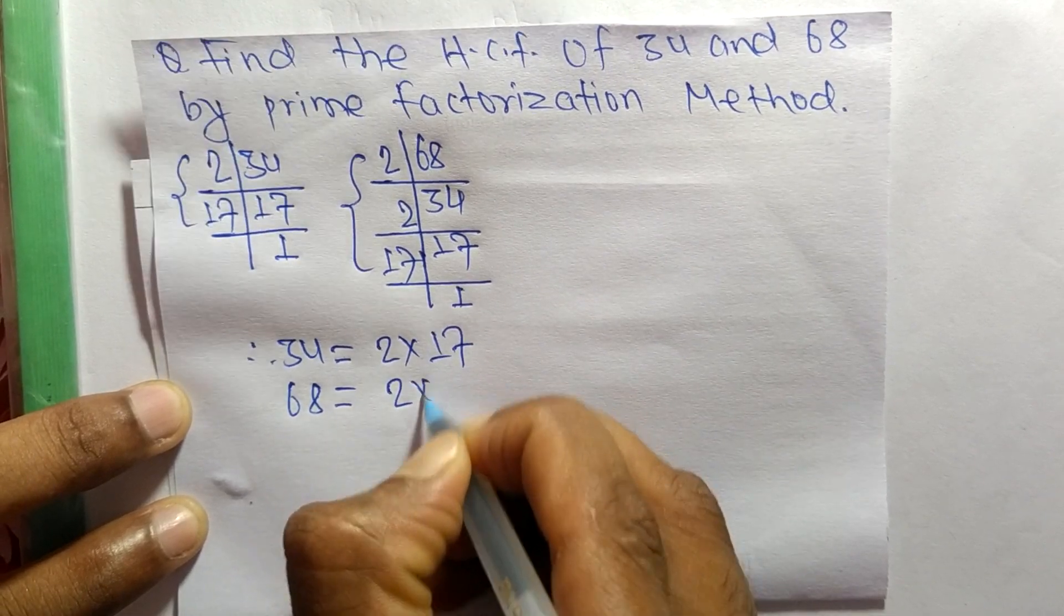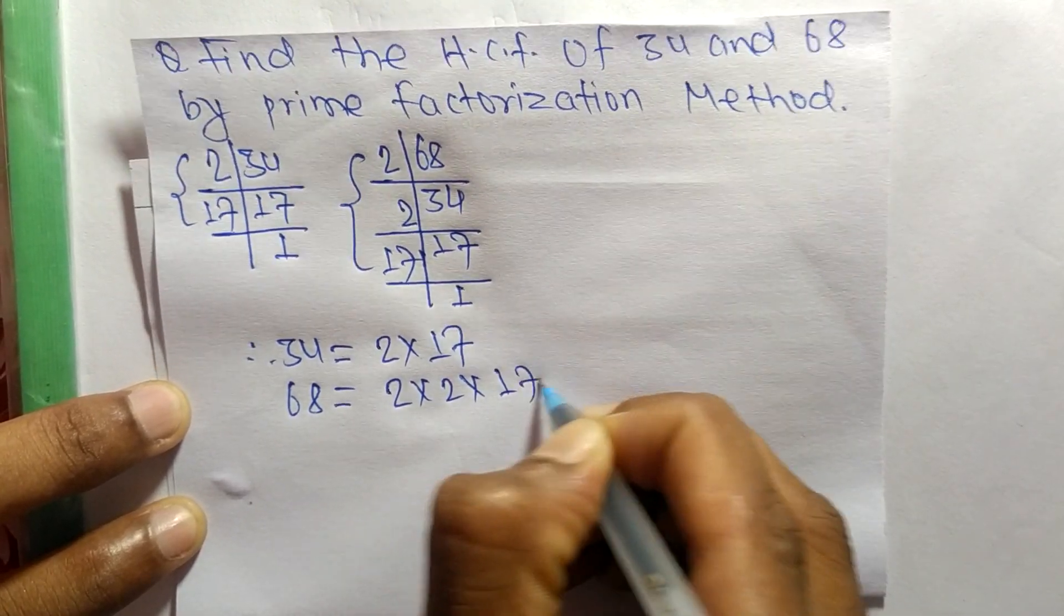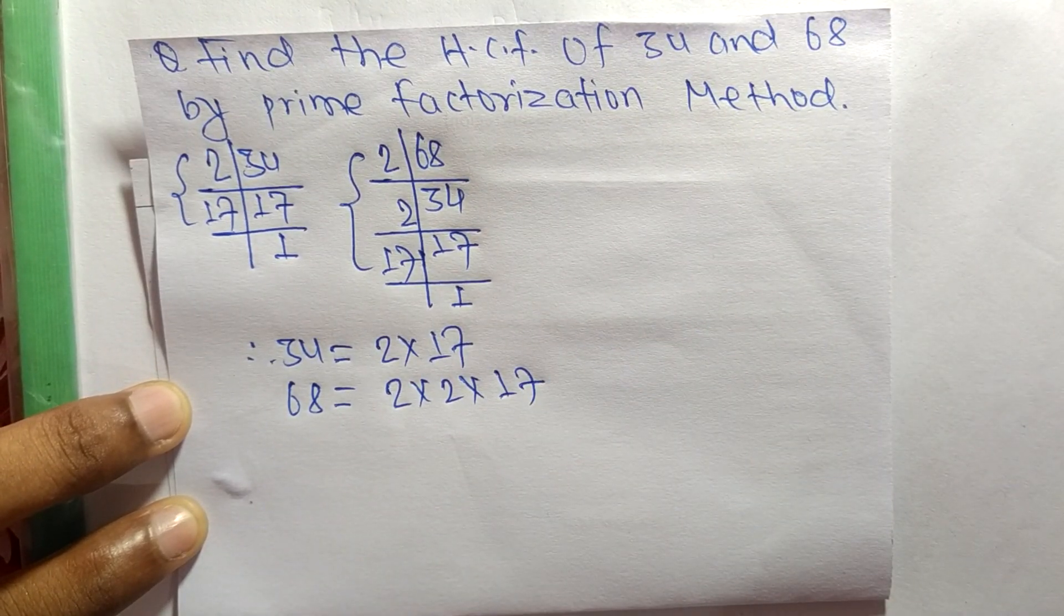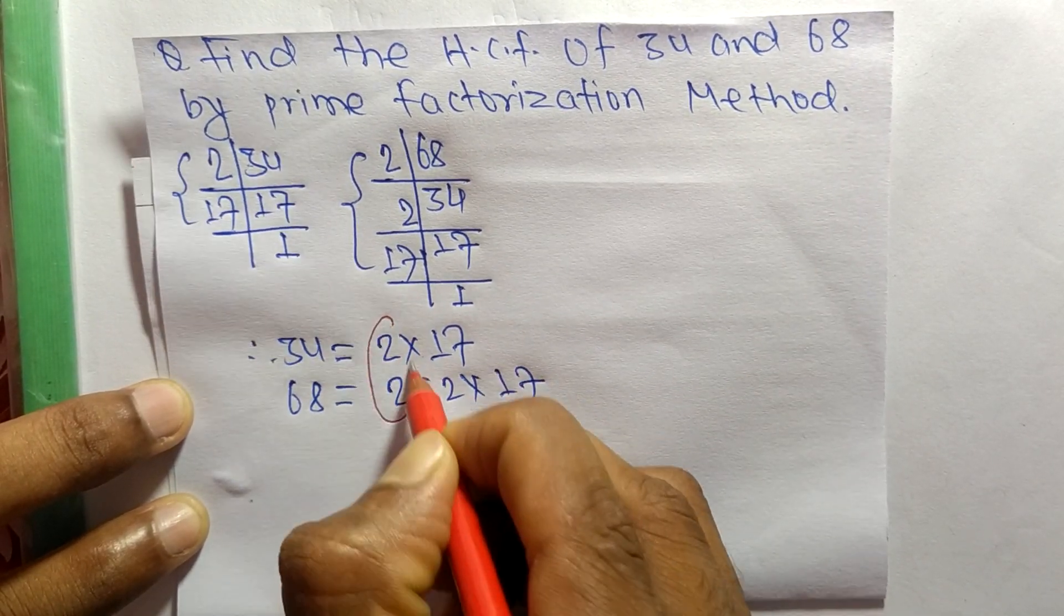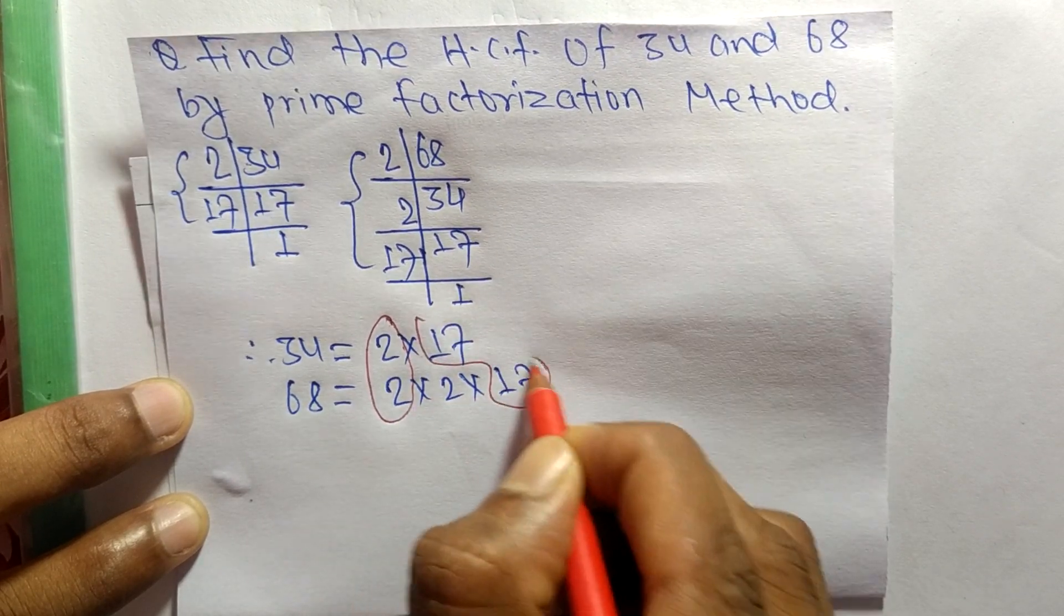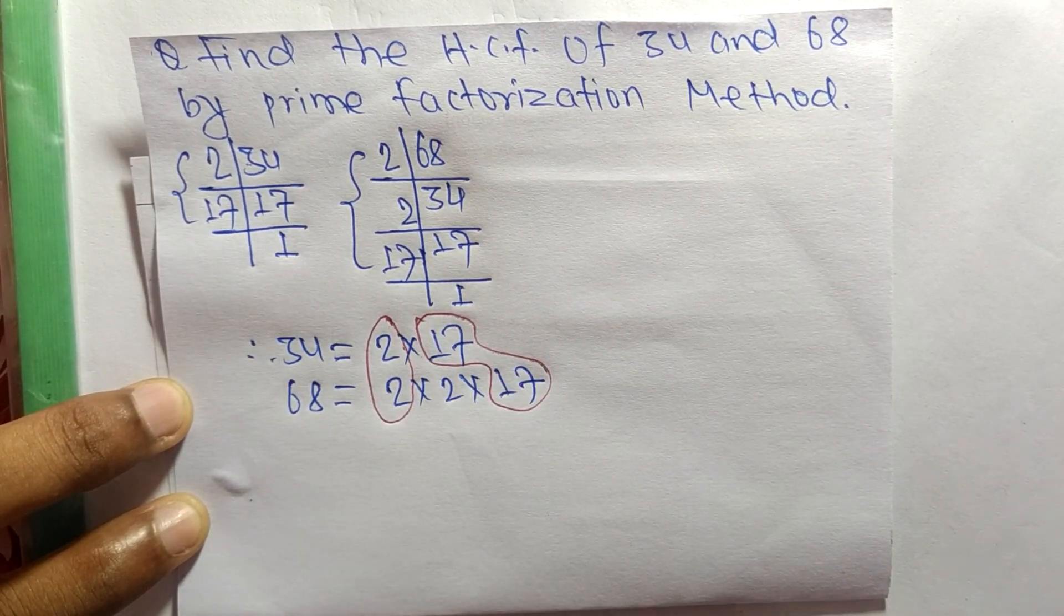Now we find out the common factors in these prime factors. So the common factors here are 2 and 17.